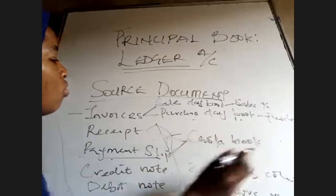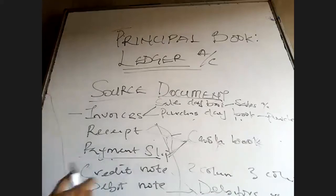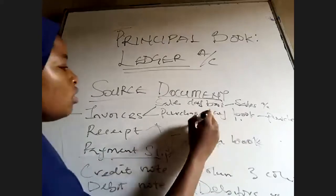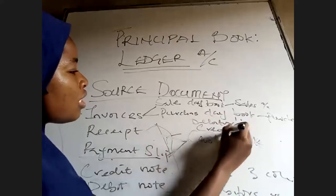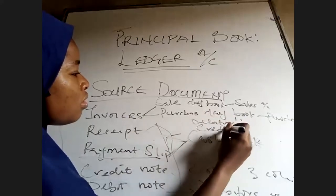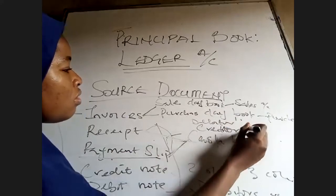When we are dealing with your debtors account and your creditors account, that's when it extends to something we usually call your debtors and creditors account. When that credit note and the debit note applies, that's the connection.